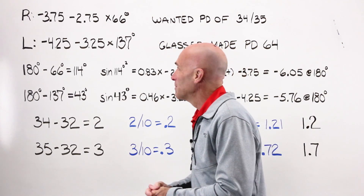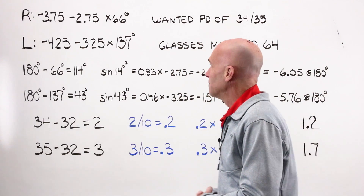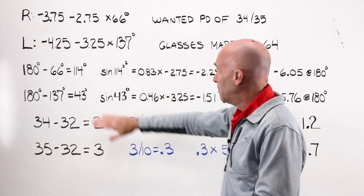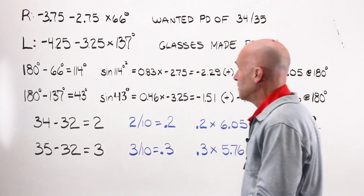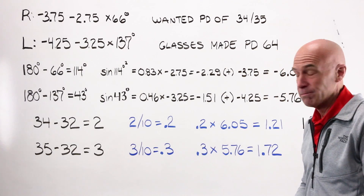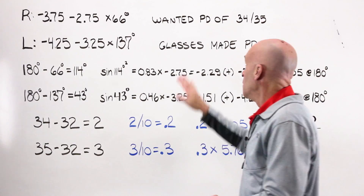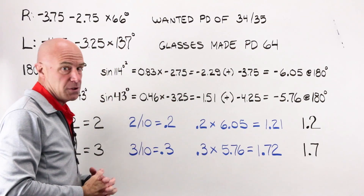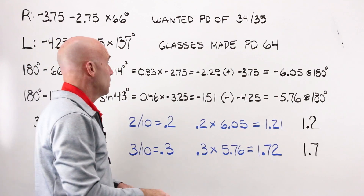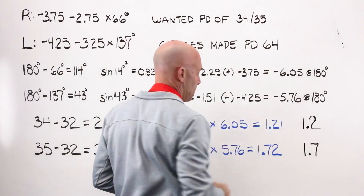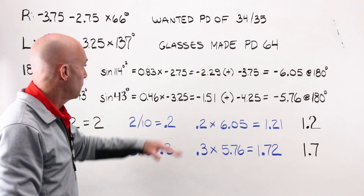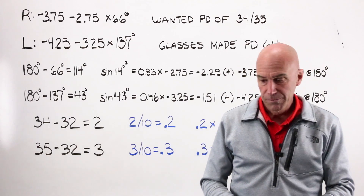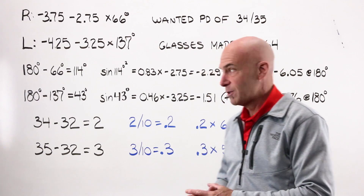Very typical prescription: minus 3.75, minus 2.75 at 66; minus 4.25, minus 3.25 at 137. We wanted a PD — the person's pretty big — of 34, 35. For some reason nobody entered a PD of any kind, it went to a default, and the glasses were made at a PD of 64, or 32/32.